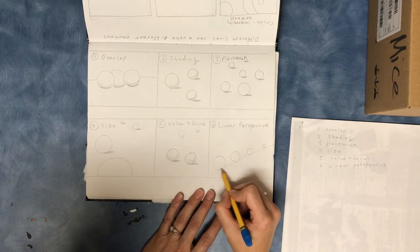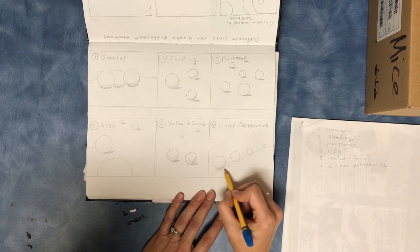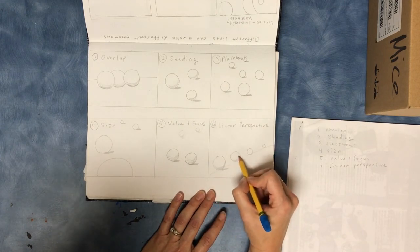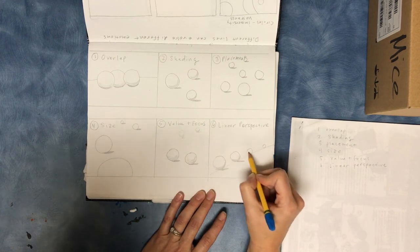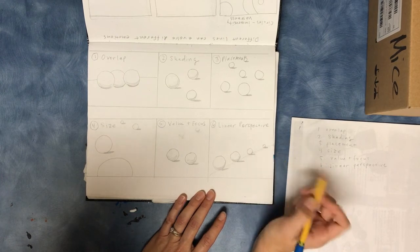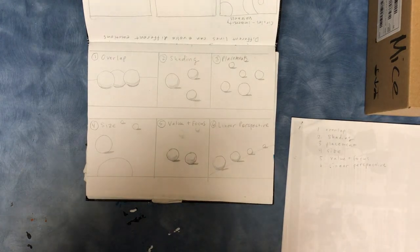And then you can add a little bit of shading if you want to make them look like they're sitting on a table. And so those are six ways you can create depth.